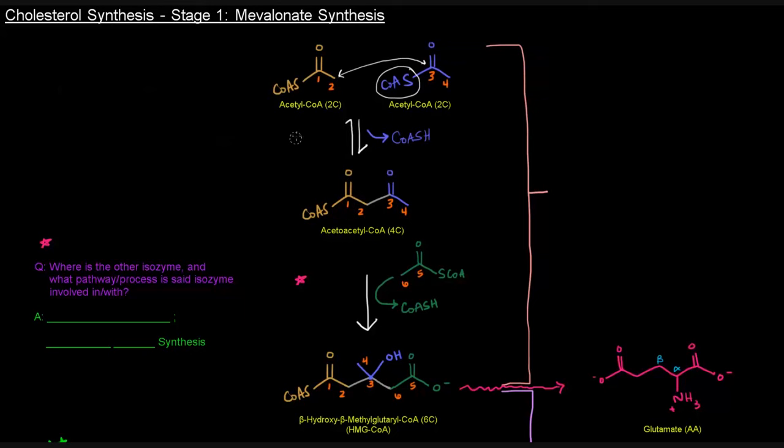And this is done by thiolase, which you might be able to recall. Thiolase was in beta-oxidation. It basically catalyzed the reverse of this, right? When we have an acyl-CoA, it would cut off an acetyl-CoA by adding a coenzyme A. So thiolase can catalyze the forward and reverse reaction here, and it happens to be the first step in mevalonate synthesis.